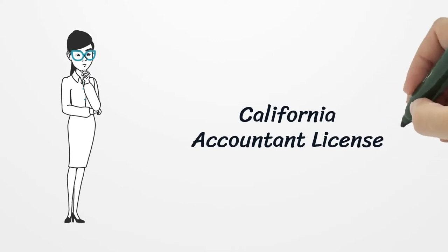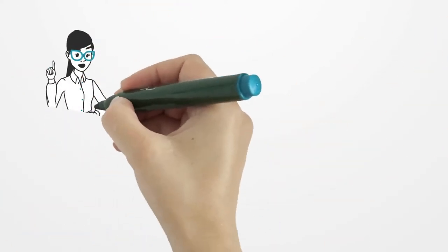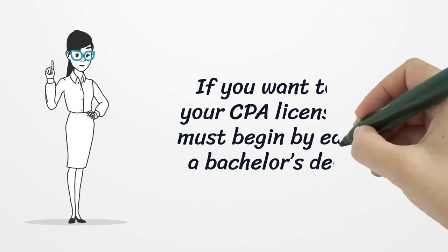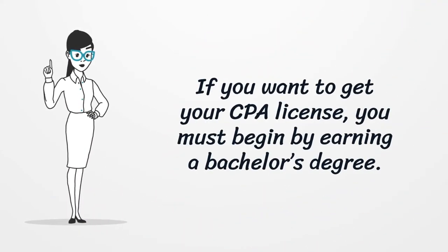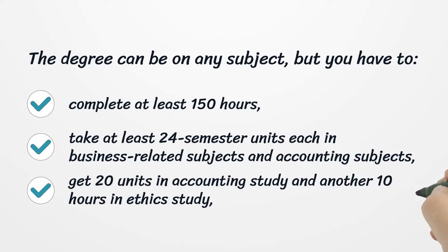California Accountant License. If you want to get your CPA license, you must begin by earning a bachelor's degree. The degree can be on any subject, but you have to complete at least 150 hours, take at least 24 semester units each in business-related subjects and accounting subjects, and get 20 units in accounting study and another 10 hours in ethics study.